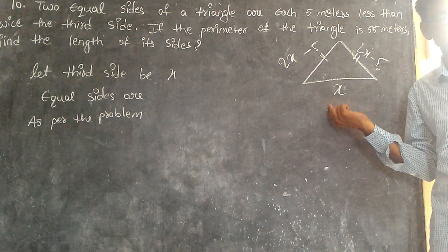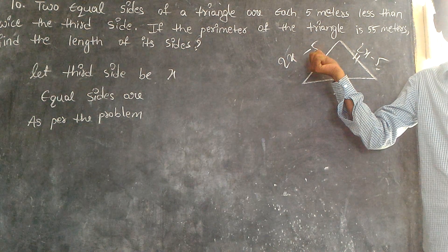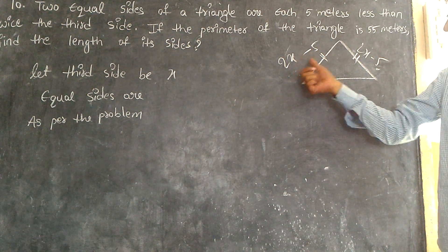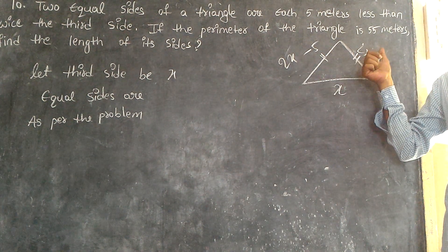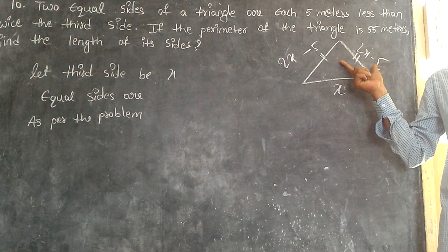Then we get the equal sides. These two are 2x minus 5 because these two are equal sides.